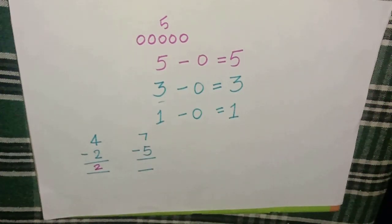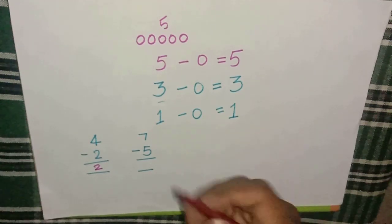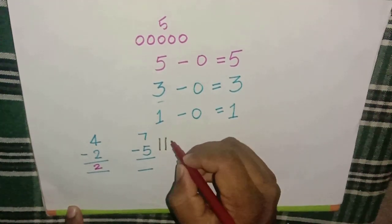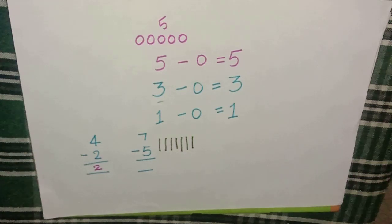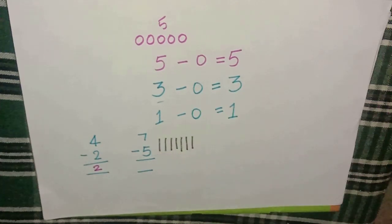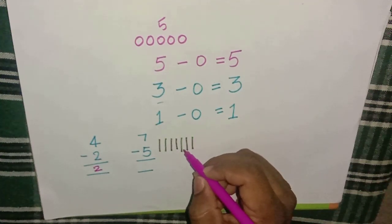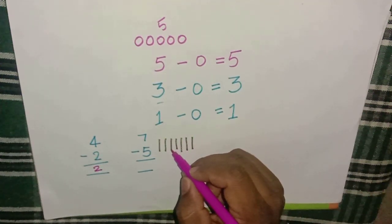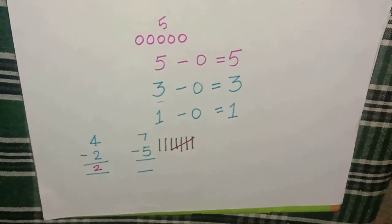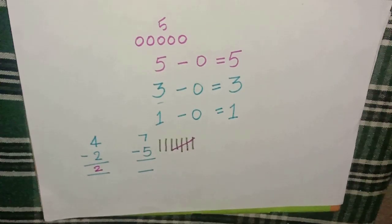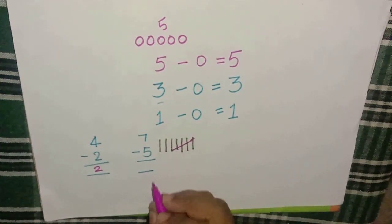Next problem: seven minus five. Let's do this with the help of lines. Draw seven lines: one, two, three, four, five, six, seven. Cancel five lines: one, two, three, four, five. After cancelling, how many lines are left? One, two — only two lines left. The answer is two.